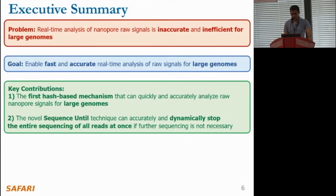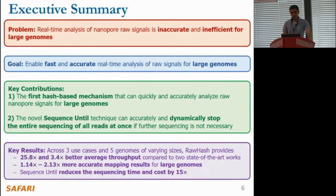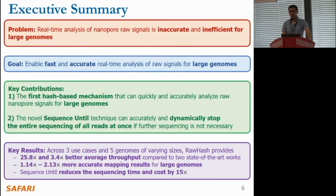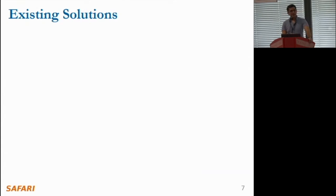Second, we introduce a novel technique called Sequence-Until that can accurately and dynamically stop the entire sequencing run if further sequencing is not necessary. Our extensive evaluations across three use cases and five genomes of varying sizes, including the human genome, show that RawHash outperforms existing state-of-the-art works. It offers average throughput that is 25.8 times and 3.4 times better than the two existing state-of-the-art works. It also delivers mapping results up to twice as accurate for large genomes, and with the Sequence-Until technique we can reduce sequencing time and potentially cost by 15 times.